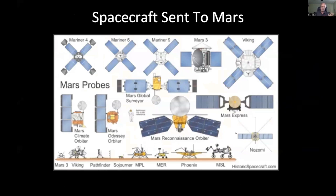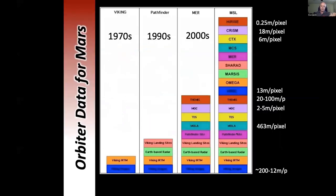We originally started with telescopic observations of Mars. Now, like on Earth, we have orbiters and satellites that go around the planet to collect data and images. There's been a variety of spacecraft sent to Mars: Mariners 4, 6, and 9; the Viking orbiters; and more modern ones like the Mars Reconnaissance Orbiter, which is our workhorse for collecting imagery. Since the late 1990s we've also put spacecraft on the ground — the first rover Sojourner, then the Mars Exploration Rovers, Curiosity which is on the surface right now, and Perseverance coming up.